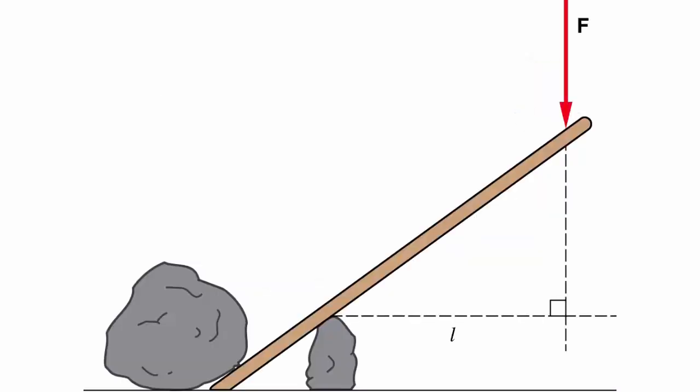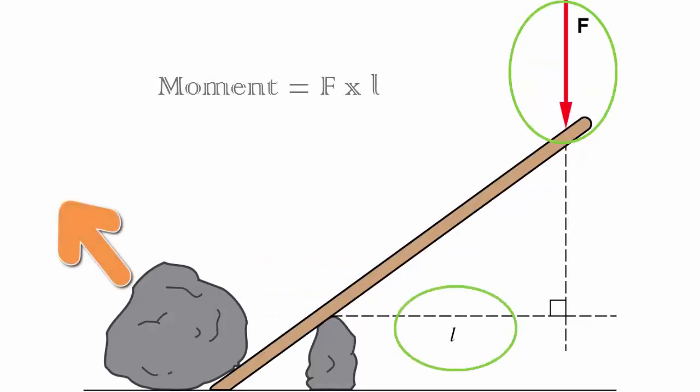In simple lever, we use the same rule to lift heavy objects. When force is multiplied with the perpendicular length, it becomes a more bigger factor than a simple force to lift objects.